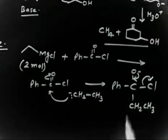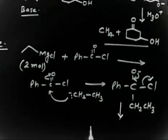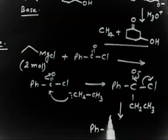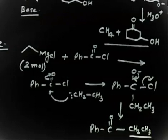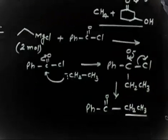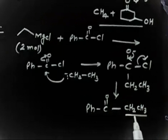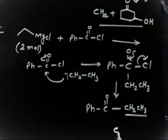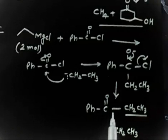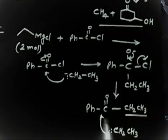Next step substitution - this will come here, this is a good leaving group, this will go back, so you will have Ph-CO-CH2-CH3. So one mole of Grignard reagent has been used, CH2-CH3 minus. One mole is used, now the next mole can also be used because this is a carbonyl carbon again, attack is possible.